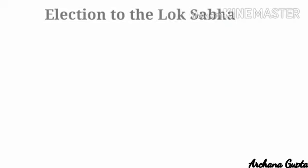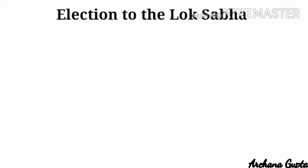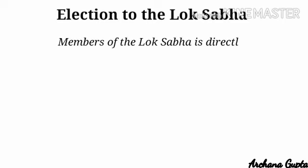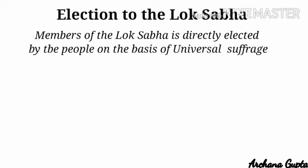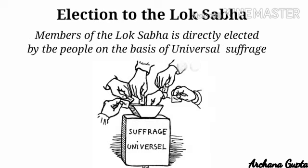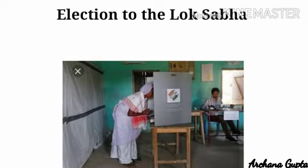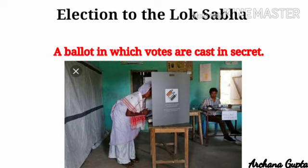Members of the Lok Sabha are directly elected by the people on the basis of universal adult suffrage, which means all citizens of 18 years of age and above have the right to vote. Elections to the Lok Sabha are held by the method of secret ballot, which means voters can cast their votes secretly without any fear, pressure, or influence from politicians.